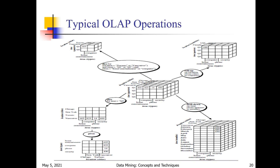Next, drill down operation. Drill down is from higher dimension to lower dimension — each record can be divided into sub-records. Along the x-axis we have time, which is divided into quarters: quarter one, quarter two, quarter three, quarter four. Each quarter can be further divided into months: quarter one into January, February, March; quarter two into April, May, June; quarter three into July, August, September; quarter four into October, November, December. That is the drill down operation.